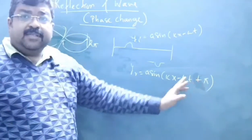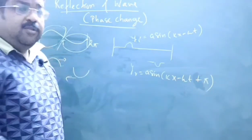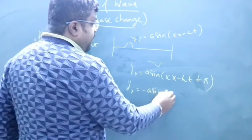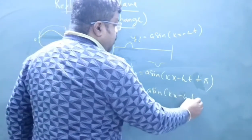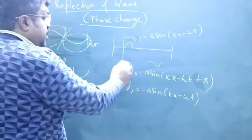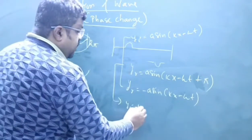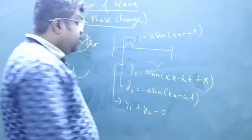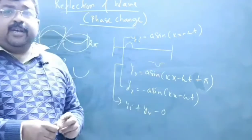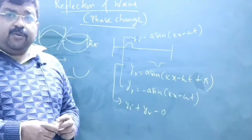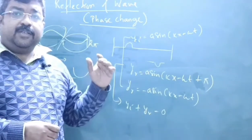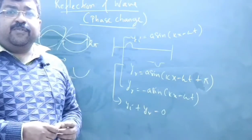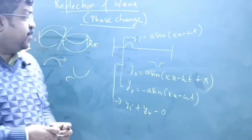Since sin(π + θ) = −sin θ, this can be written as y_r = −a sin(kx − ωt). As you can see, if you add y_i + y_r, the incident plus reflected displacement is zero. This shows that the displacement at this particular position is zero. So when reflection takes place from a fixed end, a phase change of pi is introduced.